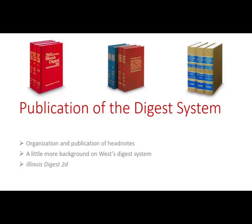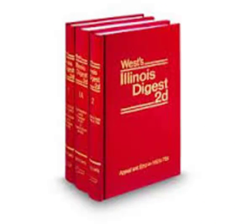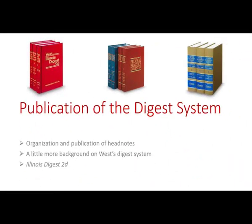Digests exist for every jurisdiction. There are state digests, federal digests, and digests corresponding to many of West's regional reporters. There's even a digest that collects all headnotes nationwide on a yearly basis. The main one you need to concern yourself with is the Illinois-specific digest — it's called the Illinois Digest. It's now in its second printing, so its exact title is Illinois Digest Second. It's red. One of the advantages of using Illinois Digest for case law research is that it includes headnotes from all cases interpreting Illinois law.